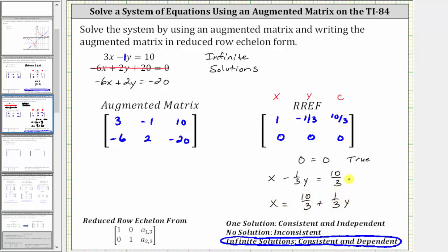So from here, if we introduce a new parameter, let's say t, where t is any real number, we could let y equal t, and if y is equal to t, notice how x is equal to 10-thirds plus one-third t.